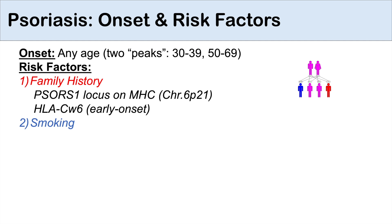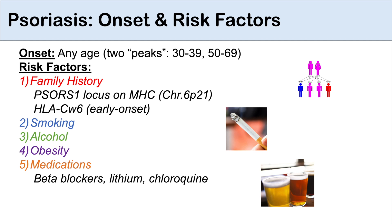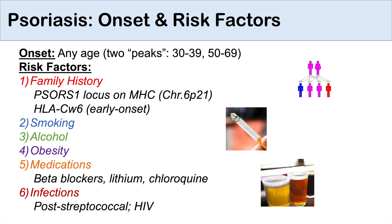Other risk factors include smoking, heavy alcohol consumption, and obesity. Certain medications can also trigger psoriasis, including beta blockers, lithium, and chloroquine. Infections have also been shown to trigger or worsen psoriasis — particularly an acute streptococcal infection, where the post-streptococcal period carries high risk for developing a certain type of psoriasis, and also HIV.